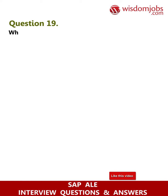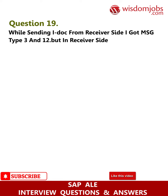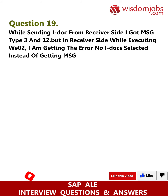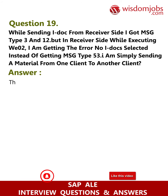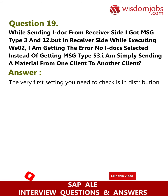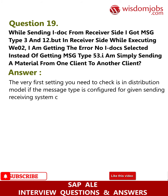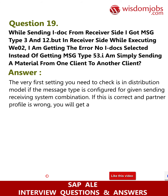Question 19: While sending an IDOC from the sender side I got message type status 3 and 12, but on the receiver side while executing WE02, I am getting the error 'no IDOCs selected' instead of getting status 53. I am simply sending a material from one client to another client. Answer: The very first setting you need to check is in the distribution model whether the message type is configured for the given sending and receiving system combination. If this is correct and the partner profile is wrong, you will get an IDOC stuck in status 56 on inbound.